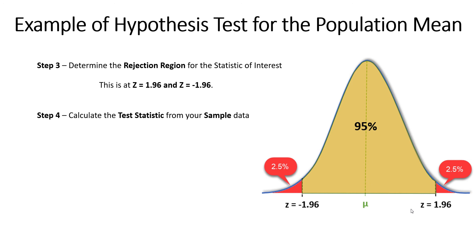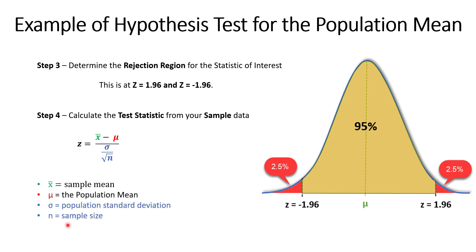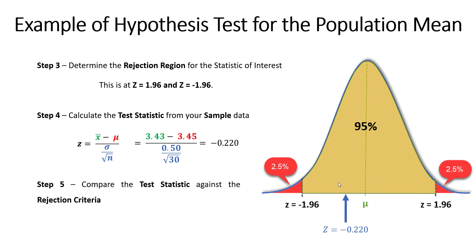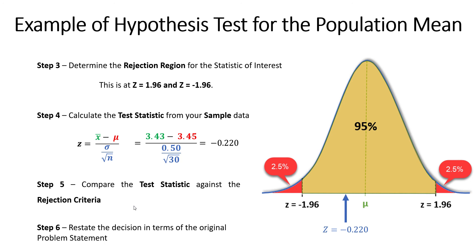Step four: calculate the test statistic from the sample data. Using the z-transformation for the sample mean distribution, there are four variables: the sample mean, the population mean, the population standard deviation, and the sample size. Plugging in those values from the problem statement gives us a z-score of minus 0.220. Graphically, that z-statistic falls well within our distribution and does not fall in the rejection region. Therefore we must fail to reject the null hypothesis. Restating the decision: based on the sample data, we must fail to reject the null hypothesis that the fill height of the glue bottles is not statistically significantly different than the historical fill height of 3.45 inches.